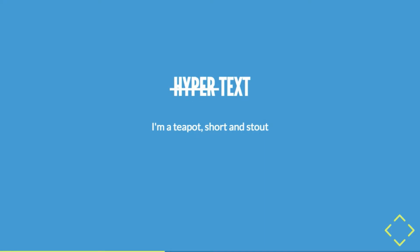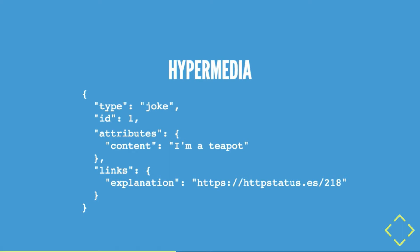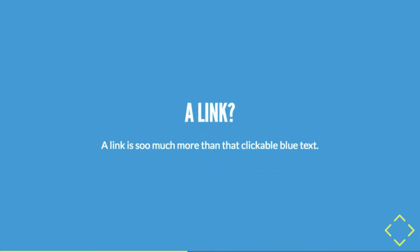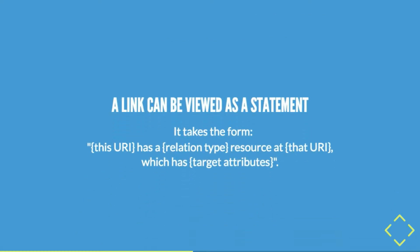So what's all the buzz about? What's this hypermedia thing? Here's text: 'I'm a teapot, short and stout' — and if you add links, you've got hypertext. That's all it is — it's some text with links in it. And this is hypermedia: it's JSON with links to other content. Hypermedia is just media that you add links to. A link can be viewed as a statement — it takes the form: 'this URI has a relation type, resource at this URI, which has target attributes.' It's like: this resource has a link that means this to that place over there.